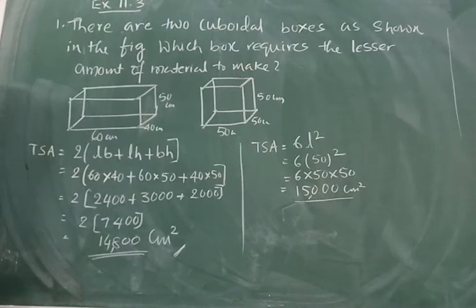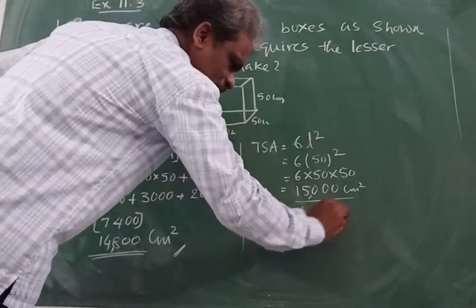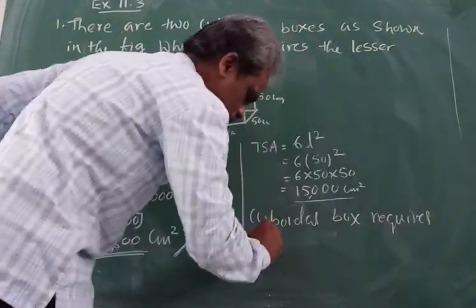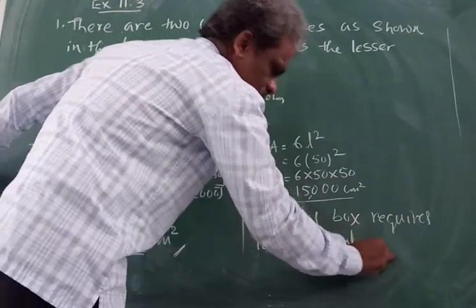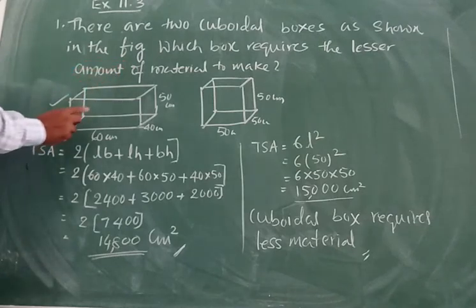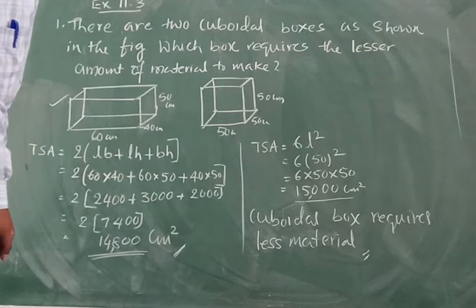So you can write cuboidal box. Cuboidal box requires less material. So in this situation we require less material to make this cuboidal box. This is the solution. The question was, which box requires lesser material? So here cuboidal box requires less material to prepare. Is it clear to all of you? Yes sir.